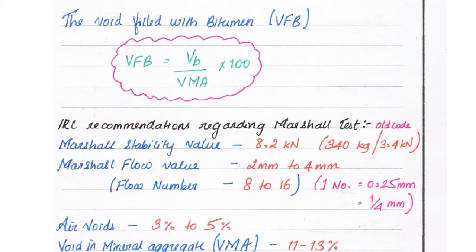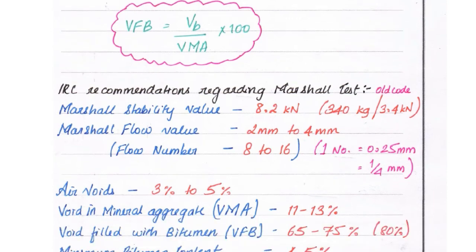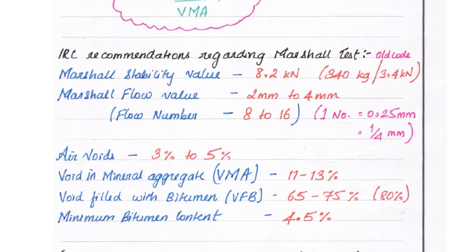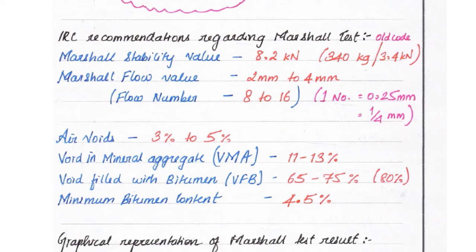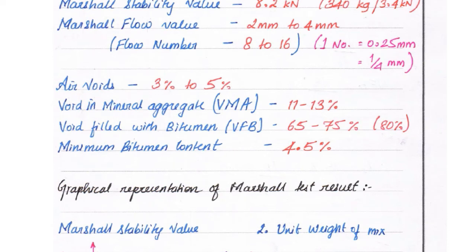IRC recommendations regarding Marshall Test: Marshall Stability Value = 8.2 kN (340 kg or 3.4 kN); Marshall Flow Value = 2mm to 4mm; Flow Number = 8 to 16 (1 No. = 0.25mm, i.e., 1.4mm); Air Voids = 3 to 5%; Voids in Mineral Aggregate (VMA) = 11 to 13%; Void Filled with Bitumen (VFB) = 65 to 75% (commonly 80%); Minimum Bitumen Content = 4.5%.